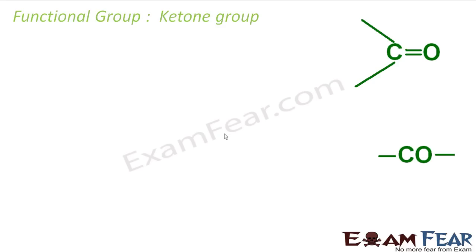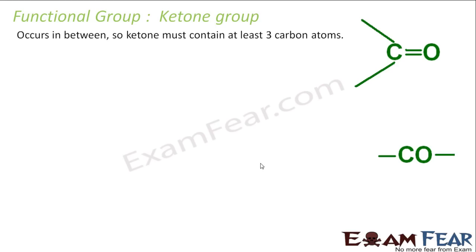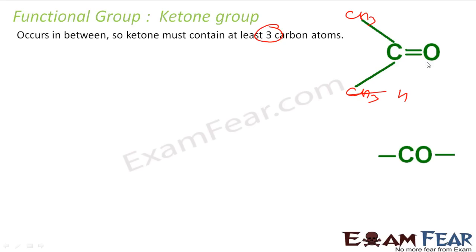Then I have something called the ketone group. Till now we have seen the OH group, the CHO group, and the COH group — all these add at the end. But the ketone group is added in between. So it should have at least 3 carbons, because the ketone itself has one carbon, and the minimum you can add on each side is CH3. If you add H here, it becomes COH, so minimum you can add is CH3, meaning the minimum ketone will have 3 carbon atoms.